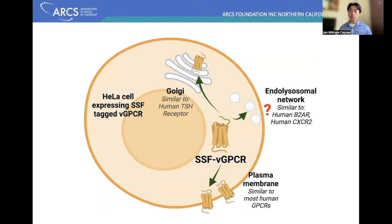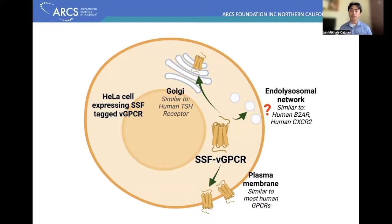So far, I've shown that it localizes to the surface of our cells, which we came to expect. But interestingly, I also show that it localizes to the Golgi — a membrane within our cells that sits next to the nucleus. The nucleus being the main control point of our cells, the Golgi is another important organelle that this viral GPCR might be targeting.